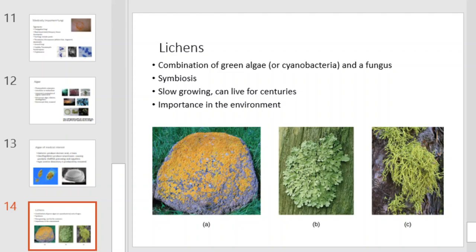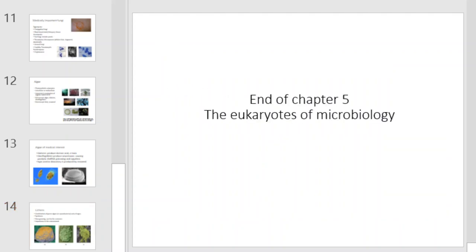Lichen is a combination of green algae or cyanobacteria and a fungus. It is an example of a symbiotic relationship between a fungus and an alga. It tends to be slow growing, can live for centuries, and is an important part of any ecosystem as a pioneer species. This concludes our coverage of the eukaryotes of microbiology.